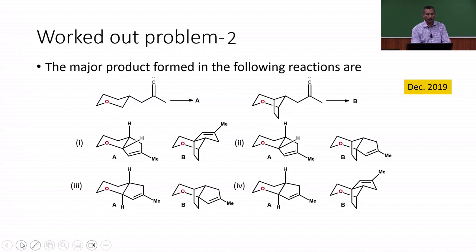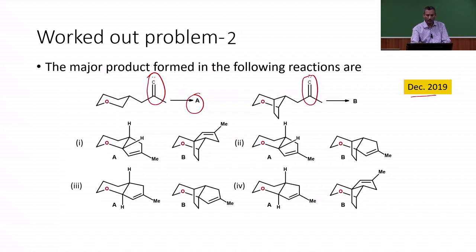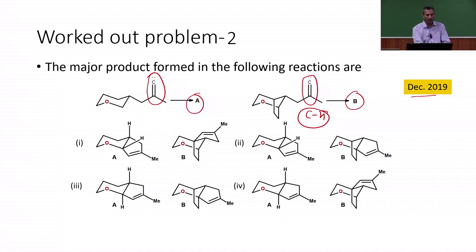Let us move on to the next problem. Here the major products formed in the following reactions are asked — this question was from December 2019. We have two carbenes; one undergoes a reaction to give product A and the second gives product B. This involves a very crucial reaction: intramolecular C–H insertion reactions, which are important reactions of carbene derivatives.